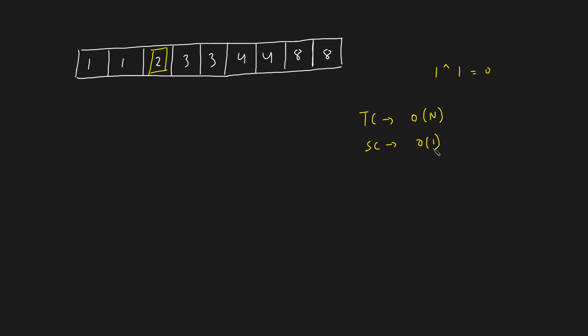Now you have to optimize the naive approach. It's a sorted array and you have to figure out the number that appears once, so the first algorithm that comes to mind is definitely binary search. So how do you apply binary search here?